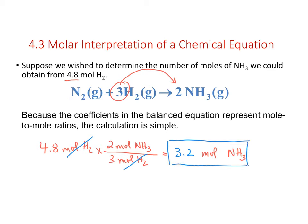The conversion factor for any mole-to-mole calculation using a balanced chemical equation comes from the coefficients. The coefficients give us that conversion factor: for every three moles of hydrogen in, I get two moles of ammonia out. Even though I'm not starting with exactly three moles, that conversion factor still lets me determine how many moles of ammonia I can make.